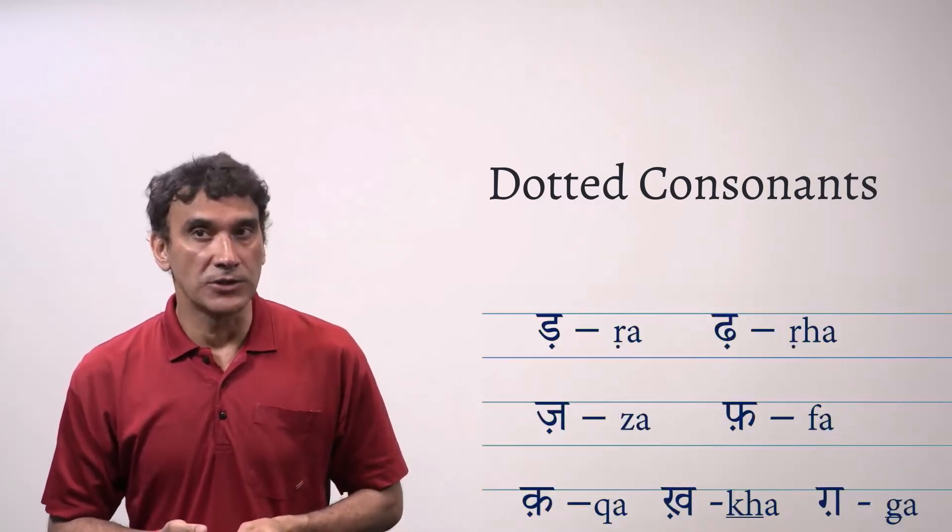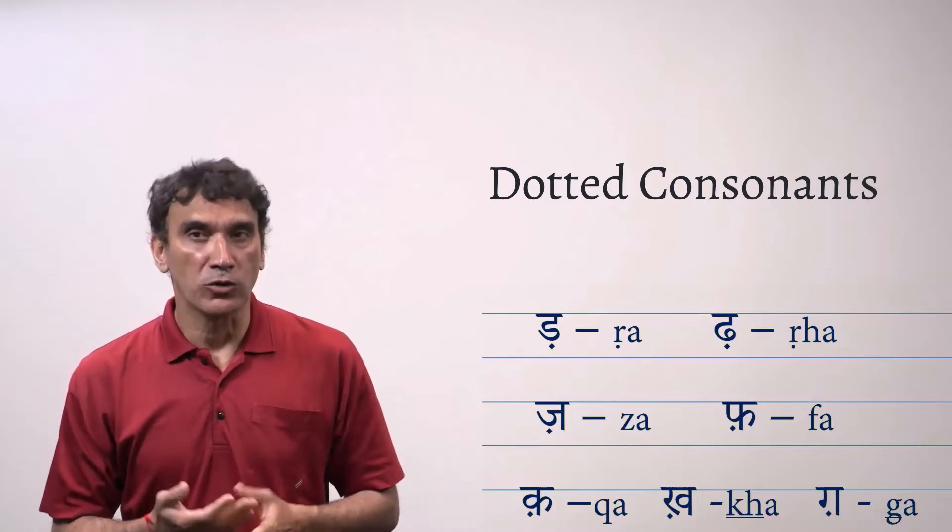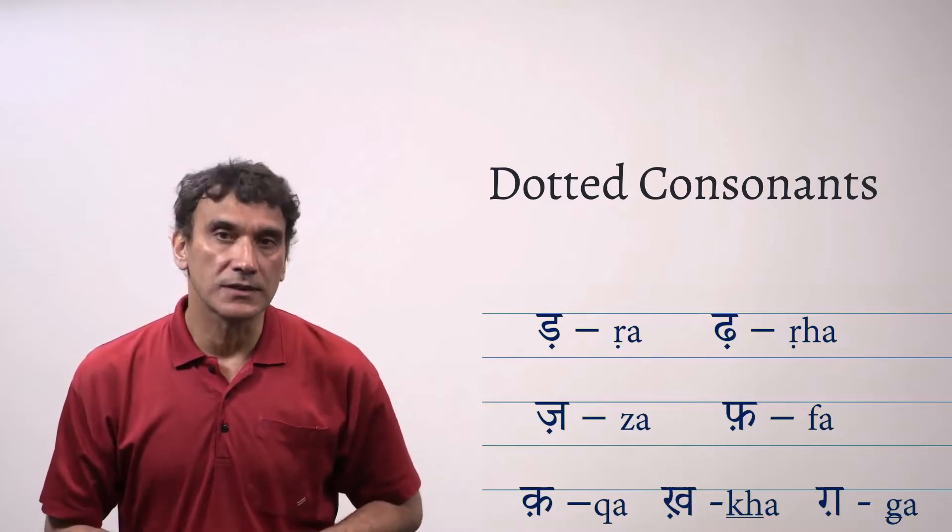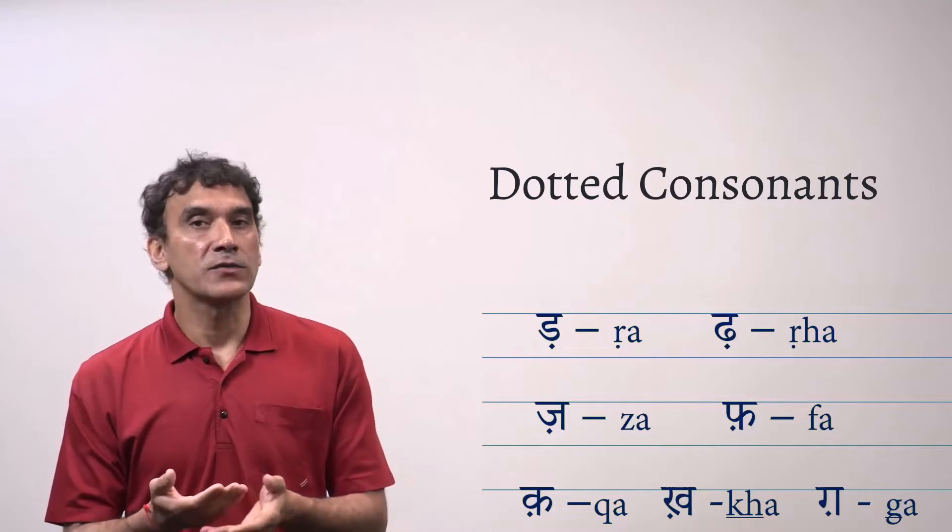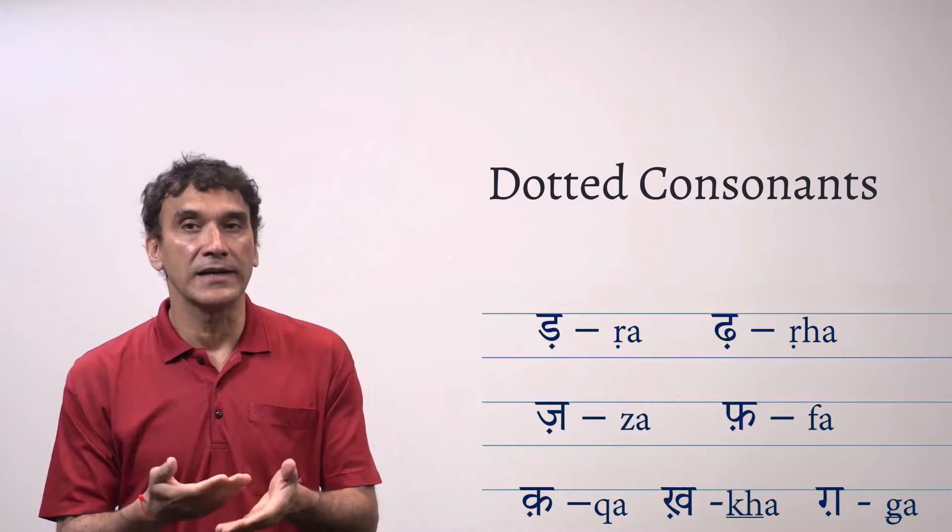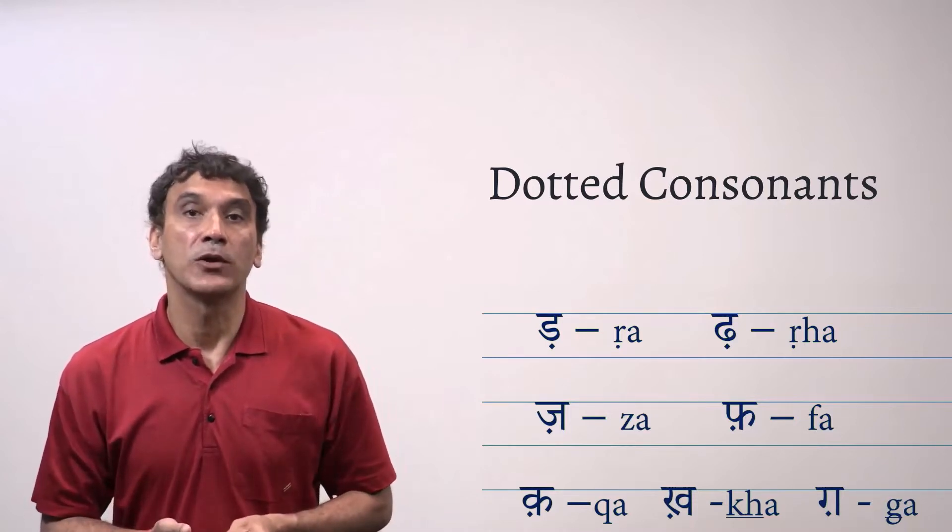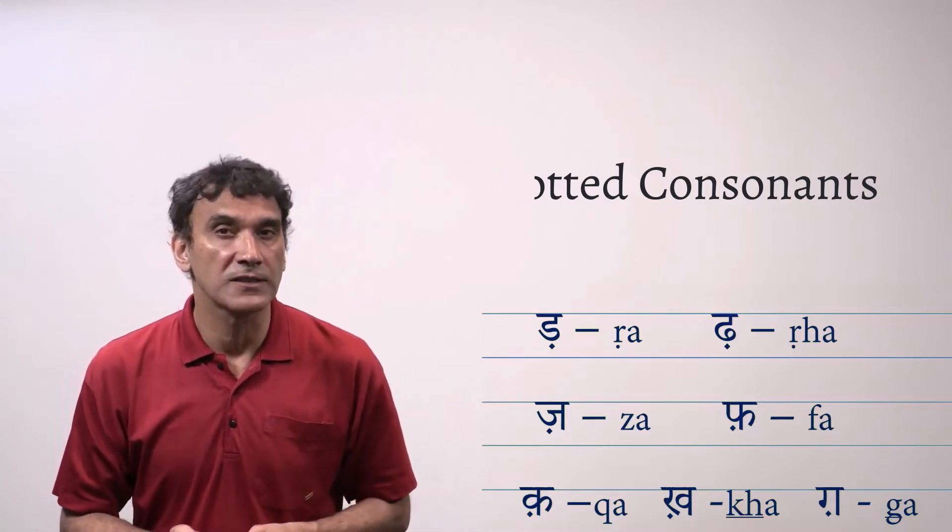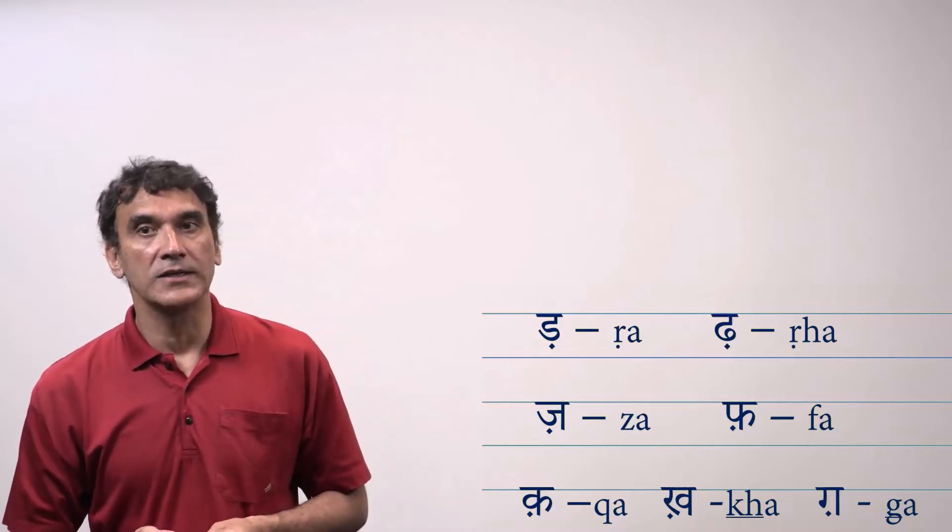All of these consonants have a dot, a Nukta below. Nukta means a dot under a consonant. When these sounds were introduced into Hindi, the Devanagari writing system modified itself by adding a Nukta, a dot below the already existing sound that was phonetically close to the introduced sounds.